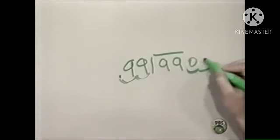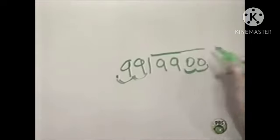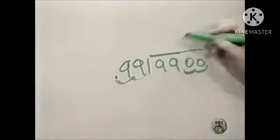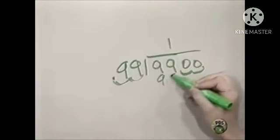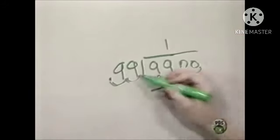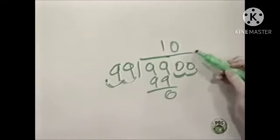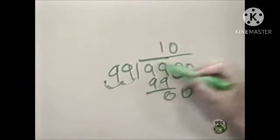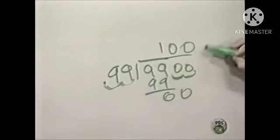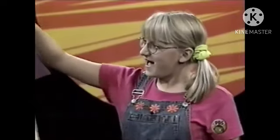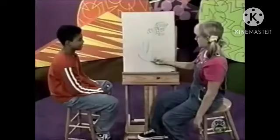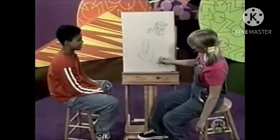Move the decimal over twice and you get two zeros. Ninety-nine goes into ninety-nine once — ninety-nine. Ninety-nine goes into zero, zero times. And again, zero times. There's our second answer — a hundred! And there are our four nines! Good job, Zoe!